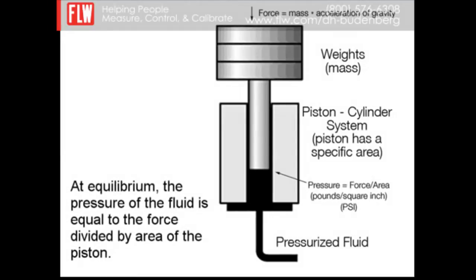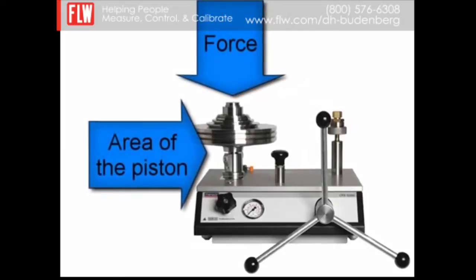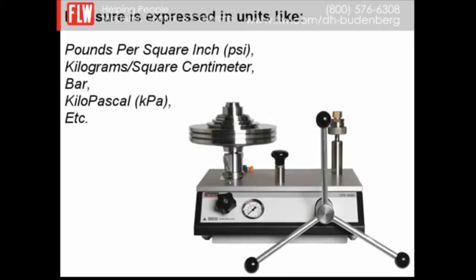At equilibrium, the pressure of the fluid is equal to the force divided by the area of the piston. This is the definition of pressure — force over a specific area. Pressure equals F over A and is expressed in several different units of measure.